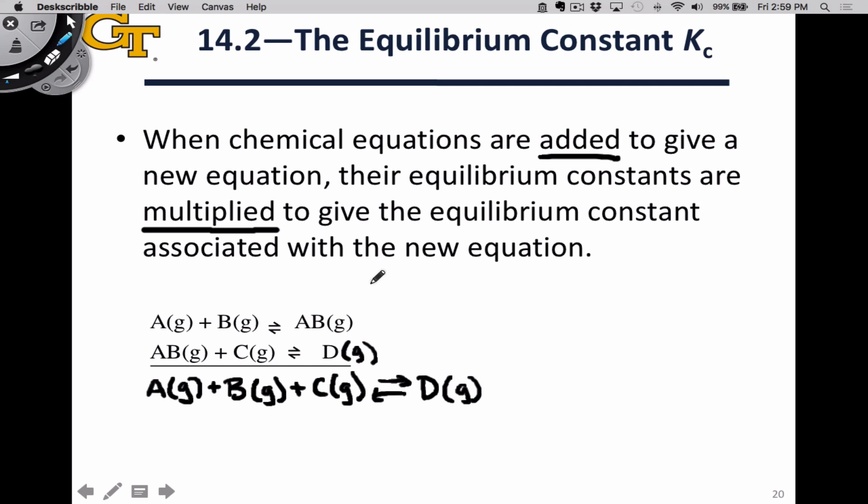We can write equilibrium expressions for each of these. Let me label each of the reactions to give myself a little bit more room. K1 here is going to be AB's concentration divided by concentration of A times the concentration of B. K2 is going to be equal to the concentration of D divided by the concentration of AB times the concentration of C.